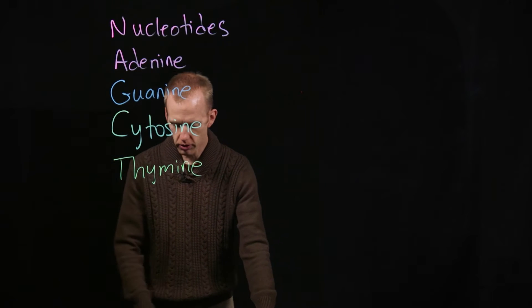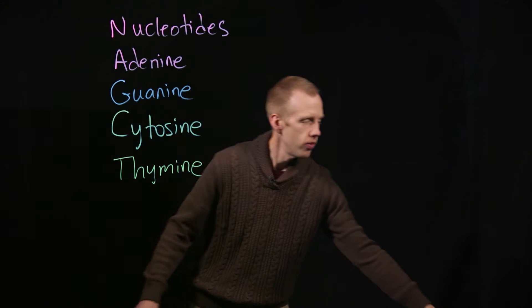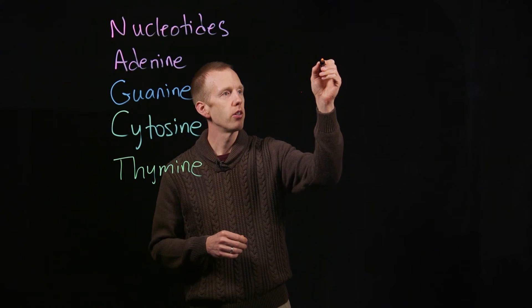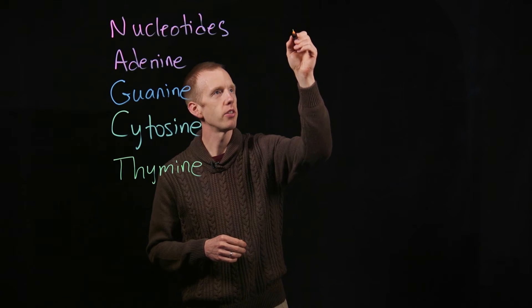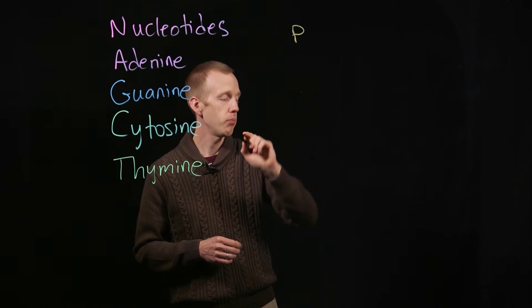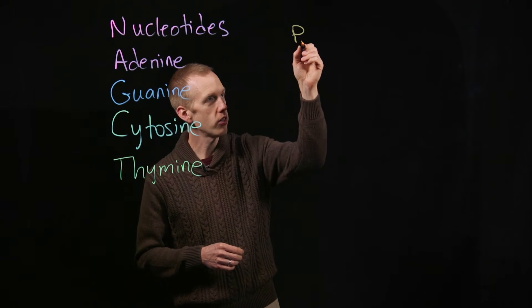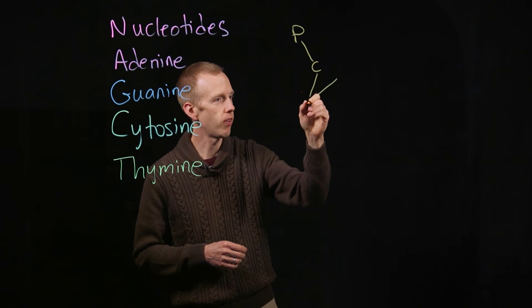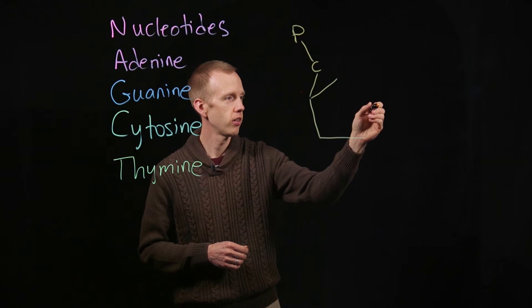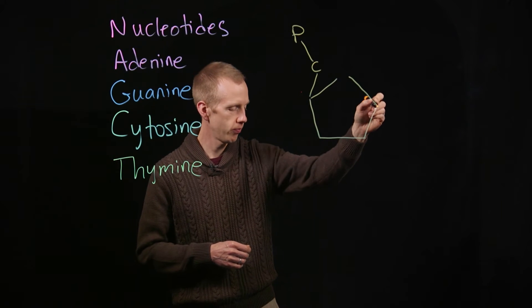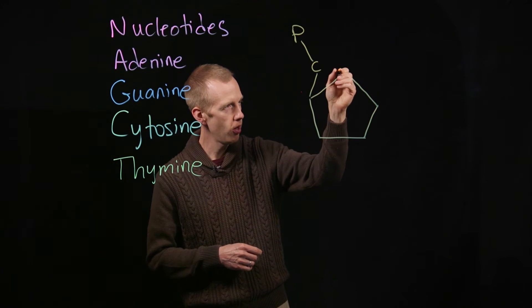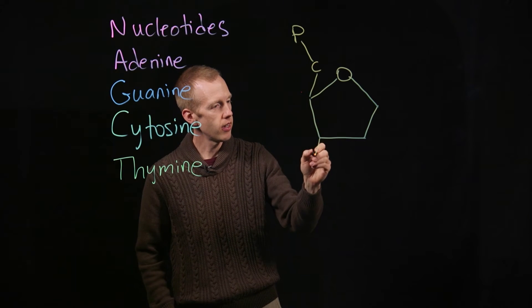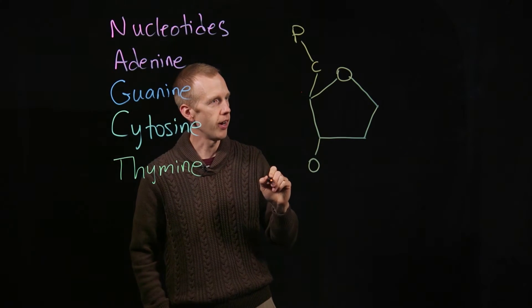And although there are chemical differences between those, they're all basically similar at the atomic level. So each of these nucleotides has a phosphate group (P) that's attached to a carbon that's attached to a five-carbon sugar molecule, with an oxygen there and an oxygen there.